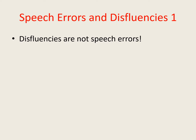To understand the variable release threshold hypothesis it's vital to get one thing straight right from the start: disfluencies are not speech errors. Speech errors are when a wrong or inappropriate sound or word comes out, whereas disfluencies are interruptions to the normal forward flow of speech.